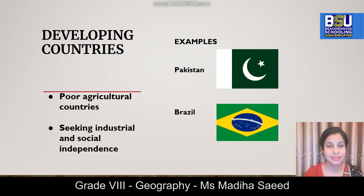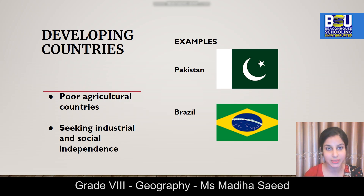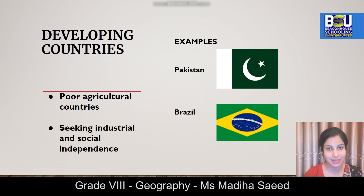The third category is developing countries. Our own country Pakistan falls in this category. Our government is trying to implement steps to ensure we transition from the league of developing countries to the group of developed nations. Another example is Brazil. A developing country is usually a poor agricultural country that is trying to seek social and industrial independence.